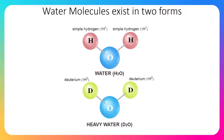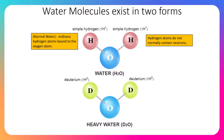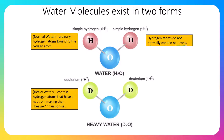Water molecules exist in two forms: normal water, which is H2O, and heavy water, which contains deuterium and is called D2O. Both are water but have some differences. Normal water has ordinary hydrogen atoms bound to an oxygen atom — hydrogen is on the periodic table as one, so it has one proton and one electron and does not normally contain neutrons because its atomic mass is one.